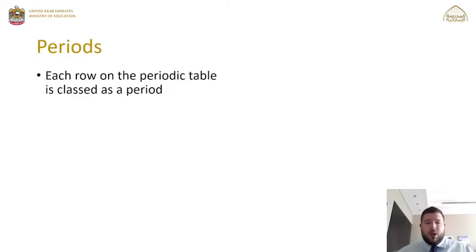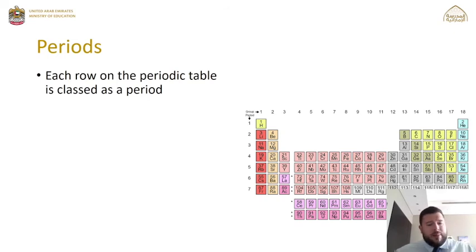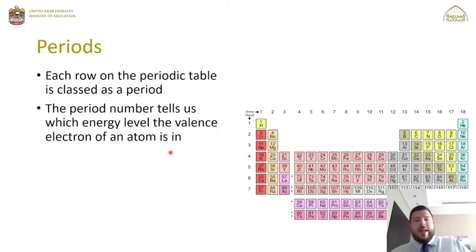Periods are the horizontal rows on the periodic table. Period 1 contains only hydrogen and helium. Moving down to period 2, we have lithium, beryllium, boron, carbon, and so on. Then period 3, period 4, 5, 6, and 7.